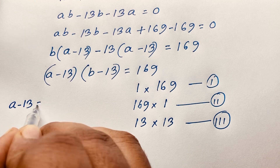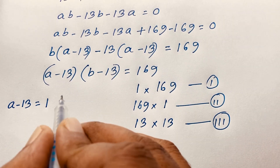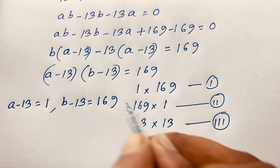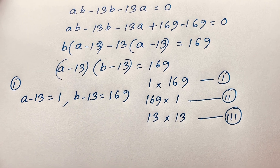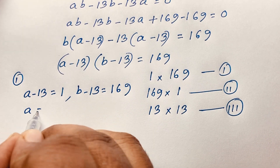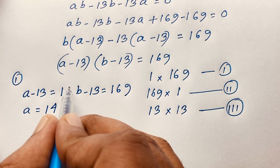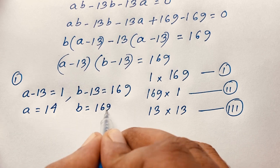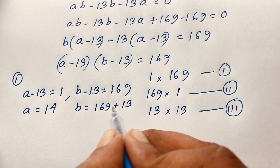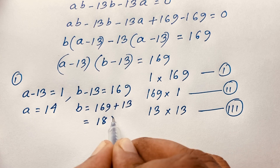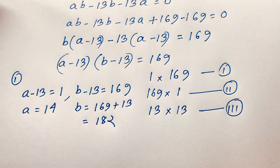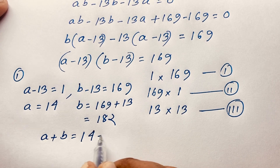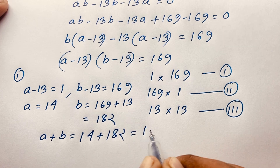Case 1: a minus 13 equals 1 and v minus 13 equals 169. So a equals 14 (since 1 plus 13 equals 14), and v equals 182 (since 169 plus 13 equals 182). Therefore a plus v equals 14 plus 182, which equals 196. This is our answer for case 1.